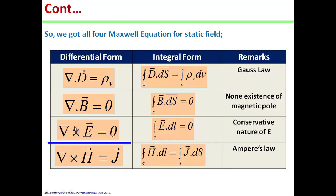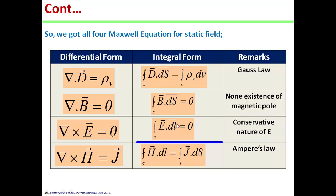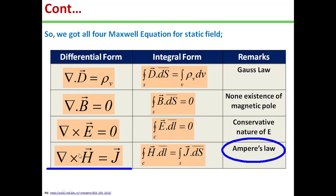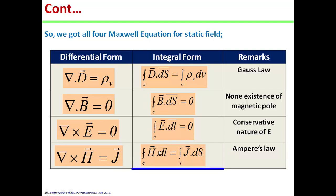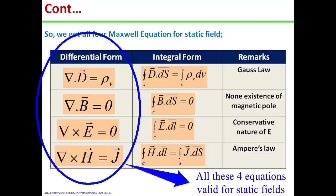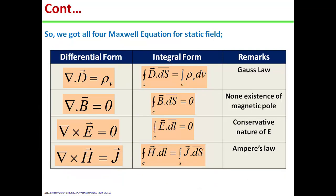The third Maxwell equation states del cross E equal to zero, indicating the conservative nature of electric fields; in integral form, closed line integral E dot dL over contour C equals zero — valid only for the static field. The fourth Maxwell equation, Ampere's law, states del cross H equal to J; in integral form, closed line integral H dot dL over contour C equals surface integral J dot ds. The choice between differential and integral forms depends on the given problem. These Maxwell equations are only for static electric and magnetic fields; the divergence equations remain the same for time-varying fields, but the curl equations will need to be modified.